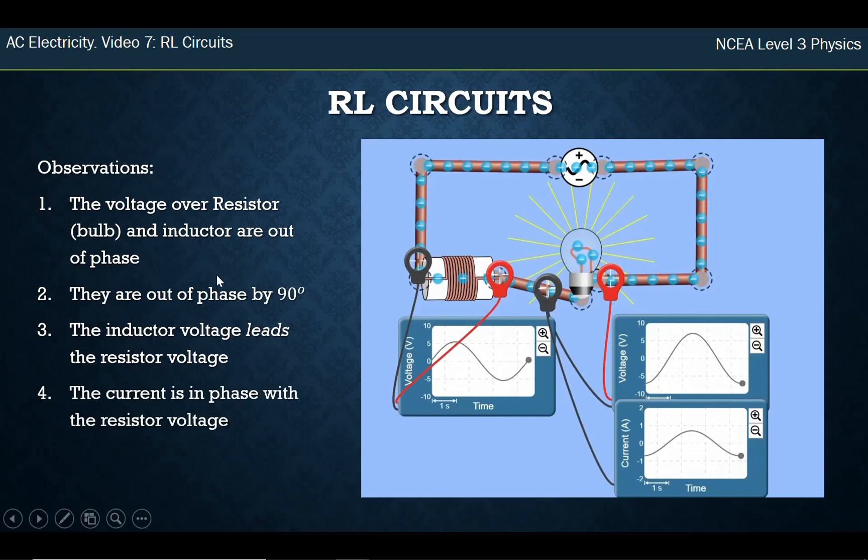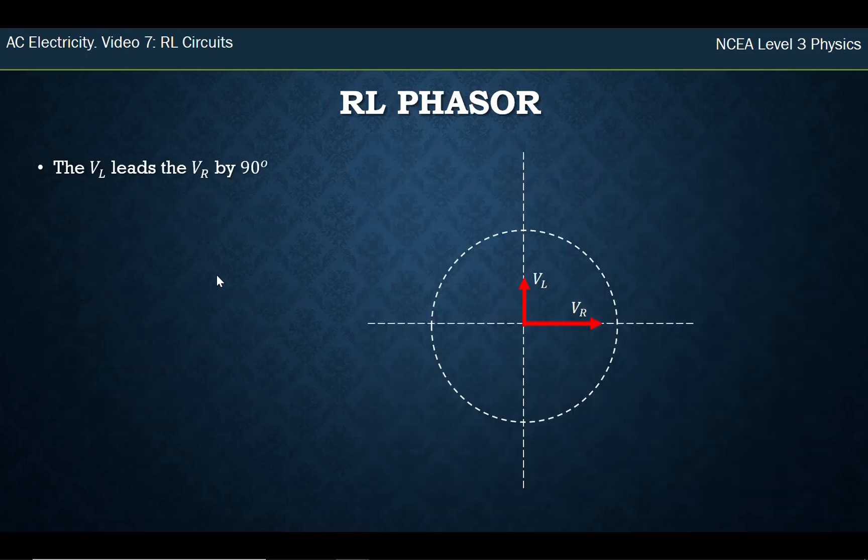And the current is still in phase with the resistor, same as before. So the only real difference between the capacitor circuit is the capacitor lags by 90 degrees, the inductor leads by 90 degrees.